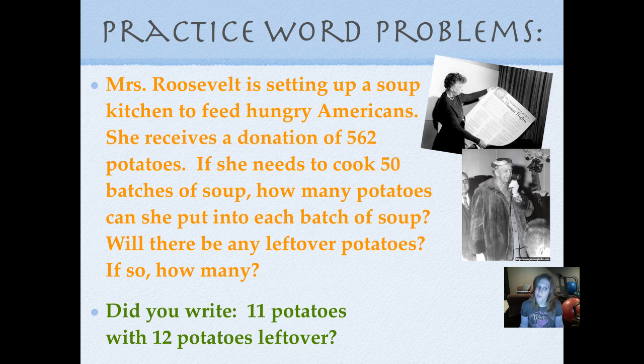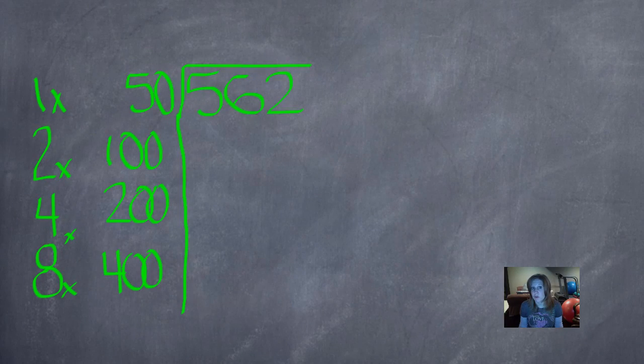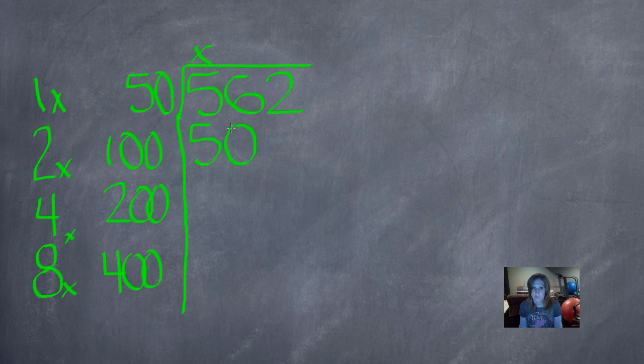Did you write 11 potatoes with 12 potatoes left over? That would be your remainder, 12. Let's see how we did that. So since she had 562 potatoes and 50 batches of soup, we're going to divide 562 by 50. So we know 50 won't go into 5. None of those numbers will. So we'll put an X there. Now we want the closest number to 56 without going over. And when we look at this column here, 50 is the number that works. And we'll have to annex 1, 0 to fill in that empty place value position. So we look at the number to the left of 50 and we write it over here in our quotient column. Then since we annexed a 0 here, we're going to annex a 0 here. Now 2 minus 0 is 2. 6 minus 0 is 6. And 5 minus 5 is 0.